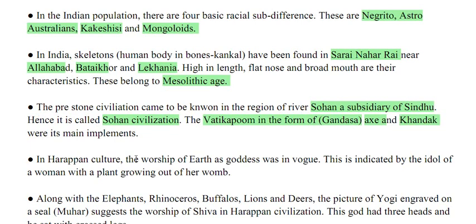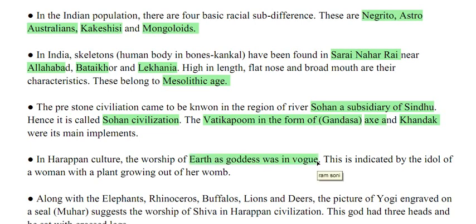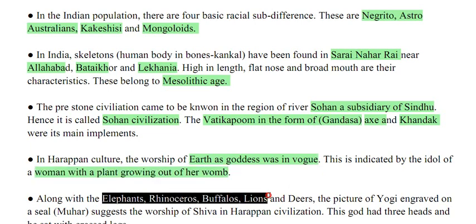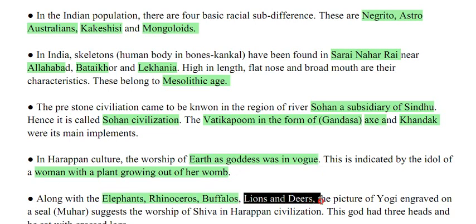In Harappan culture, the worship of earth as goddess was prevalent. This is represented by the idol of a woman with a plant growing out of her womb. Along with elephants, rhinosaur, buffaloes, lions and deer, the picture of a yogi engraved on a seal suggests the worship of Shiva in Harappan civilization — this god had 3 heads and sat with crossed legs.